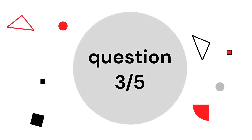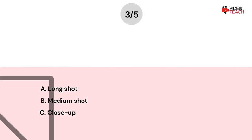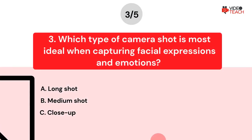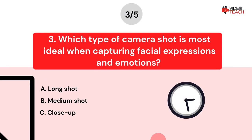Question number three. Which type of camera shot is most ideal when capturing facial expressions and emotions? Option A: Long shot. Option B: Medium shot. Option C: Close up. Now you have about 15 seconds to think about your answer.